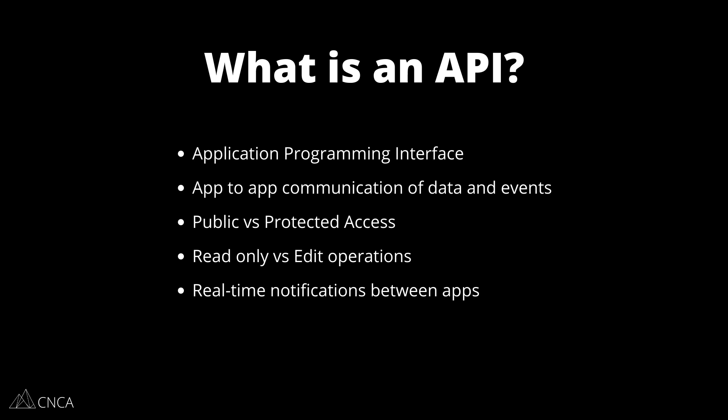So again, from your Bubble application, you can make a request to create a new Stripe subscription, or you can be notified whenever a credit card fails on a subscription. This communication of data and things happening on either end of the connection is really what the API is all about — it's to allow that line of communication to happen between the two sides.